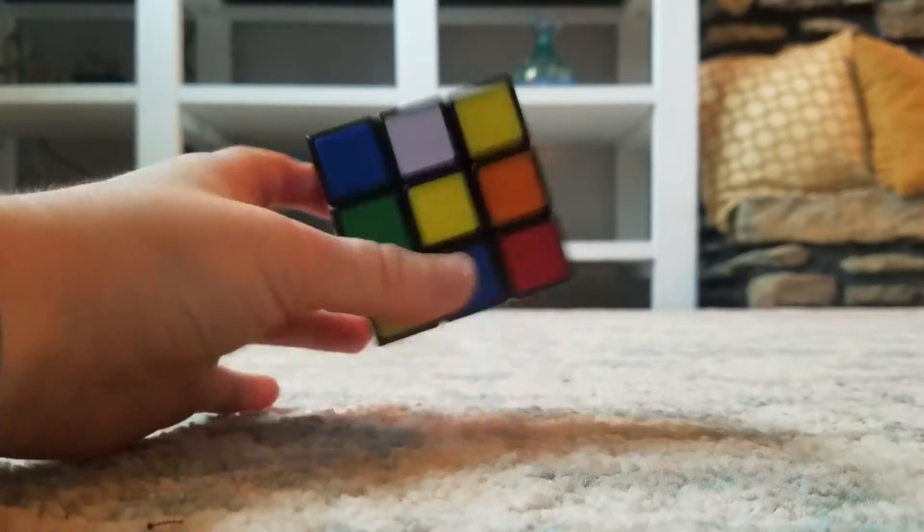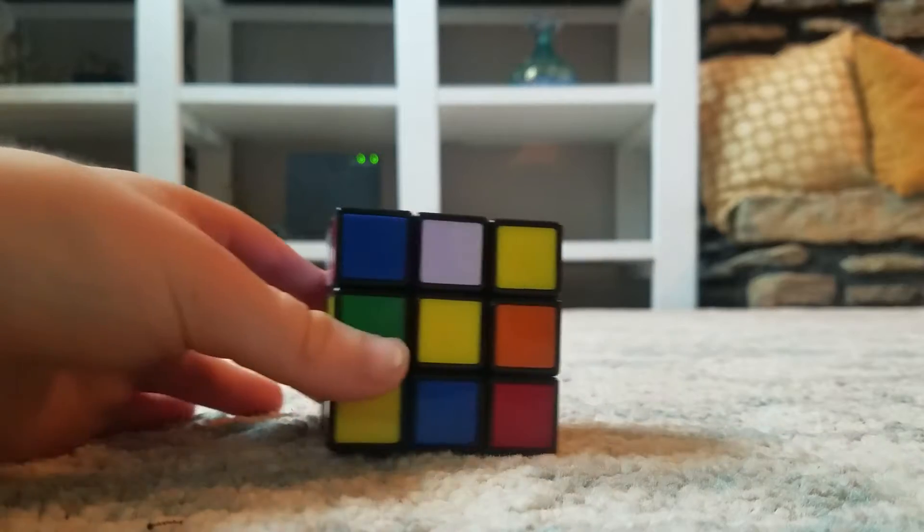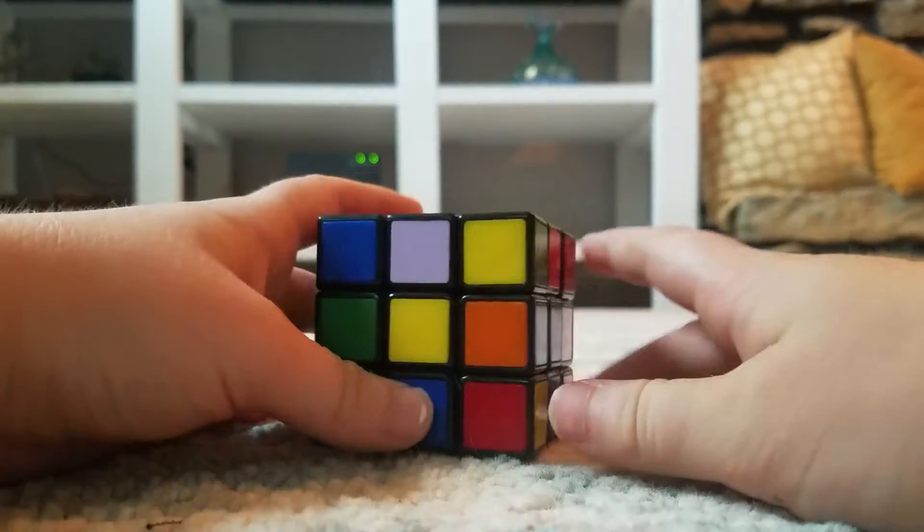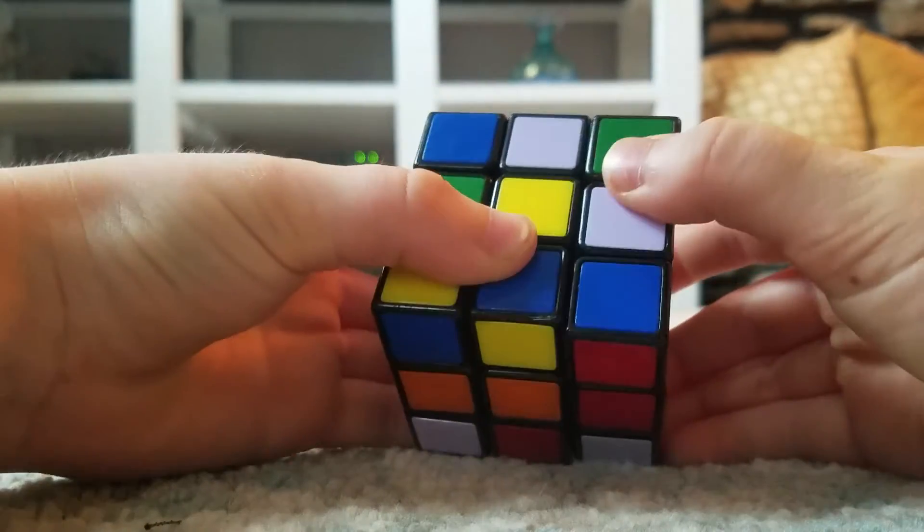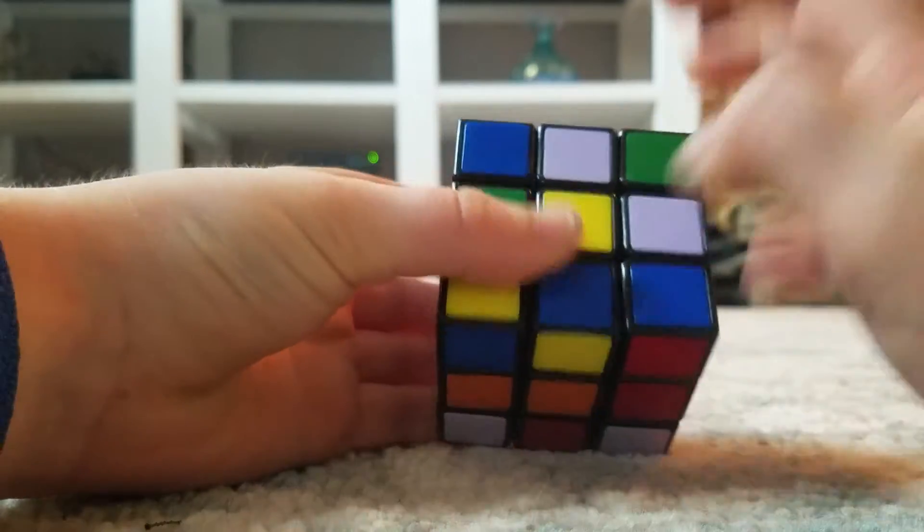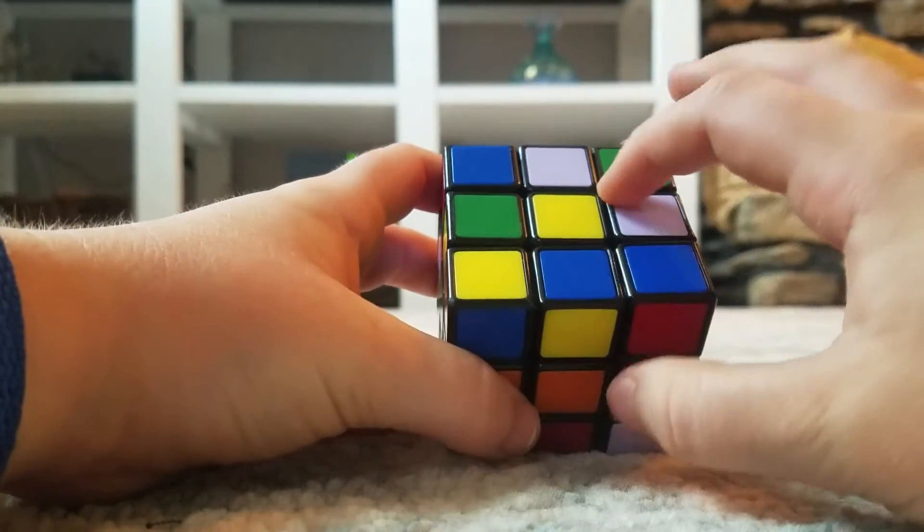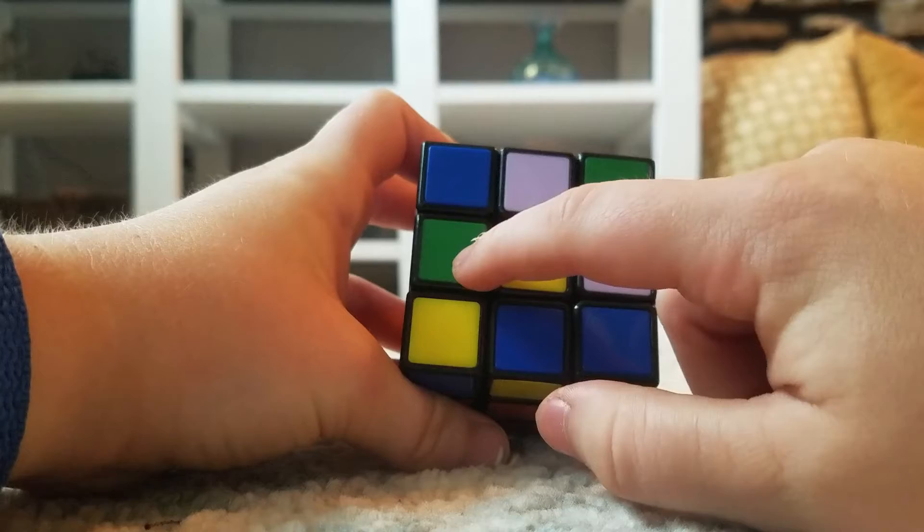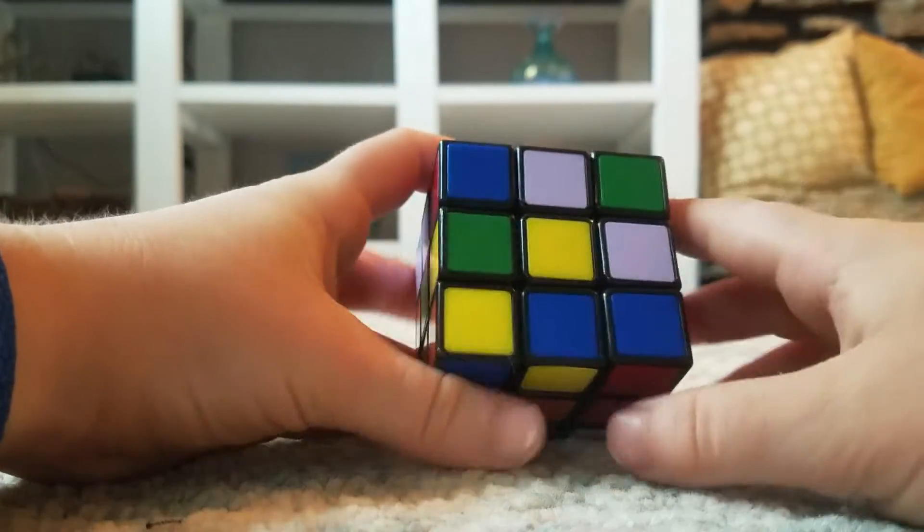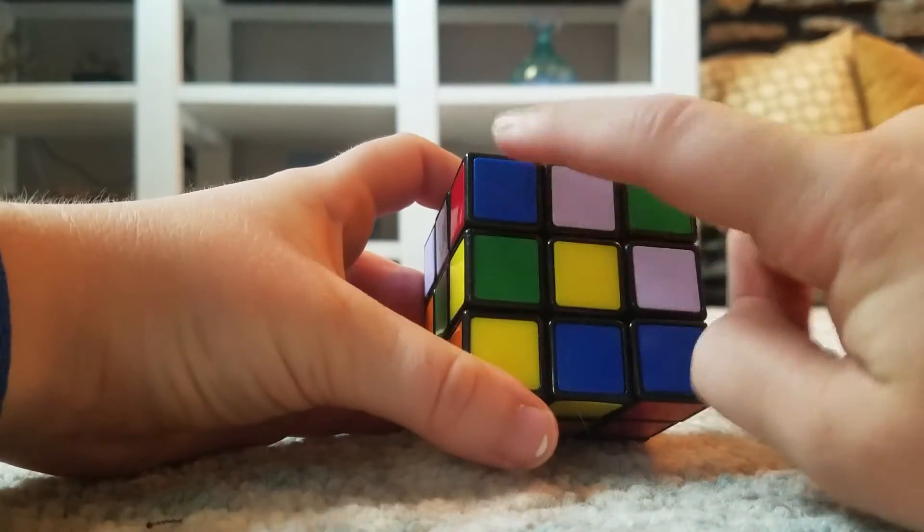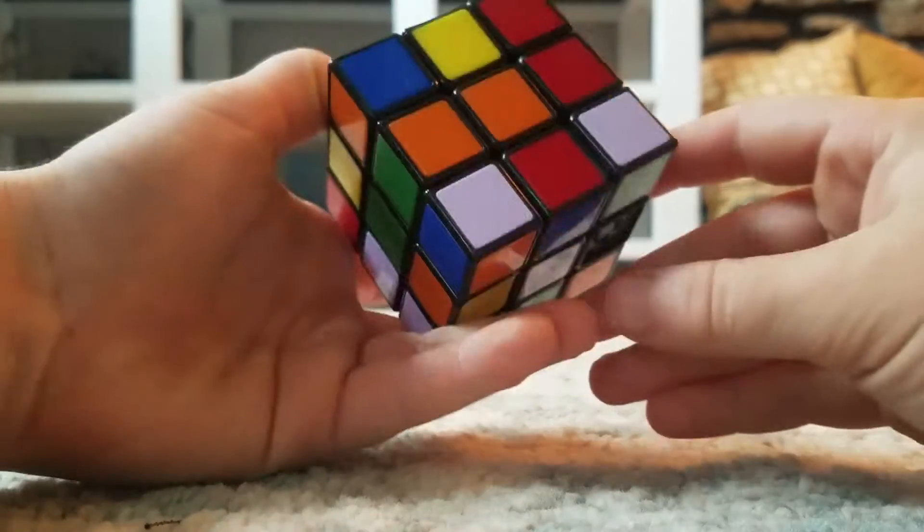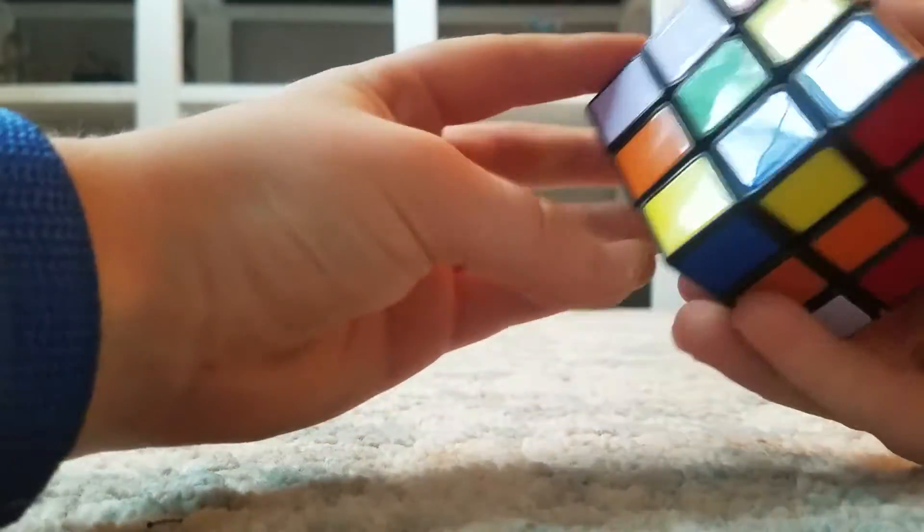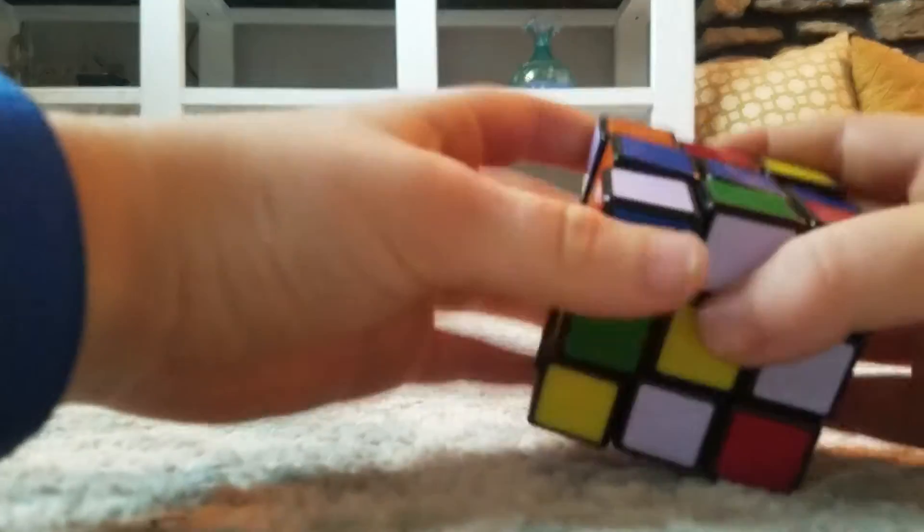All right, so you want to find the yellow center, and then you want to get all white pieces right here, right here, right here, and right here. That's where you want them. If you have some on the corner, it doesn't matter. I just got lucky, I had them all right there.